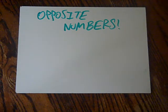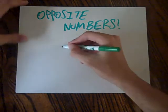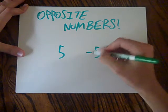Okay, so today we're going to be learning about opposite numbers. So opposite numbers are basically 5 and negative 5.